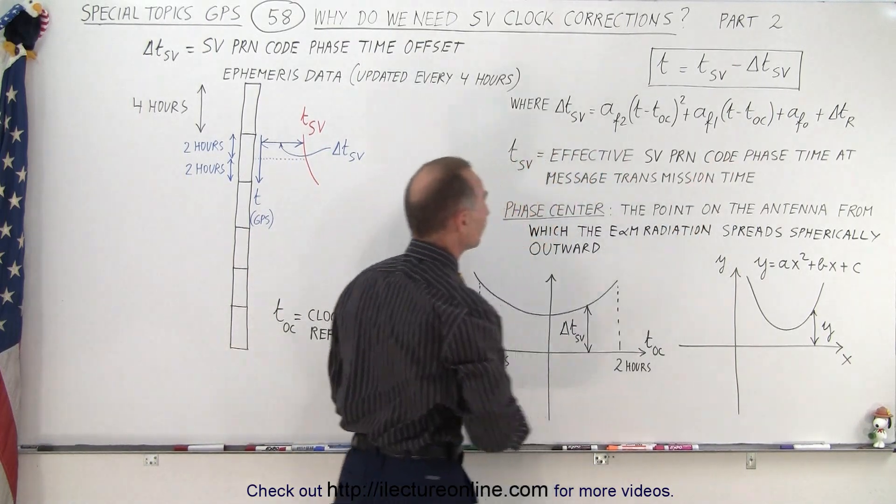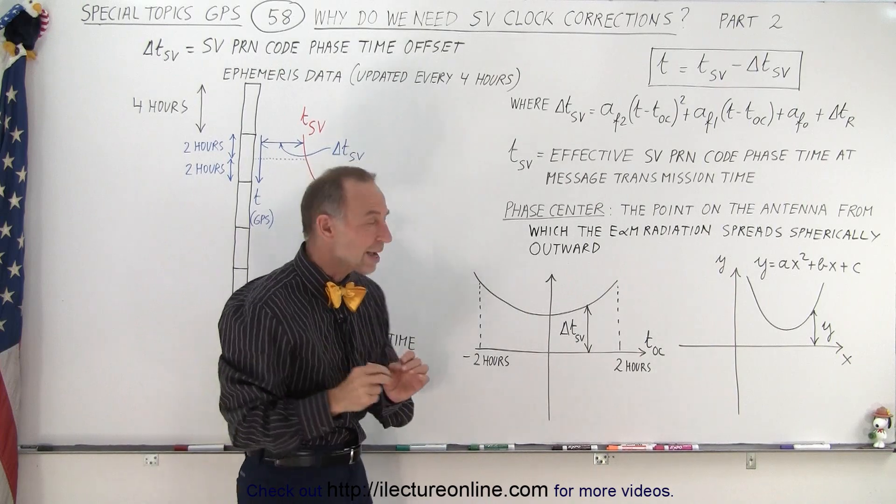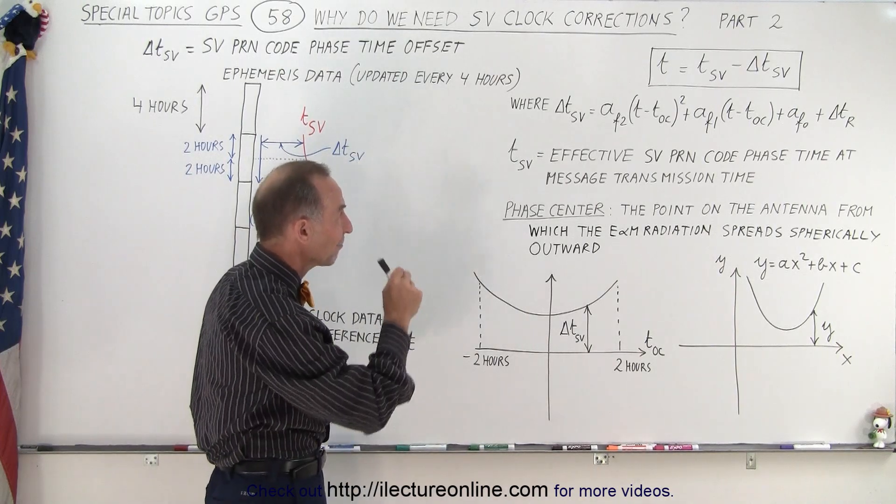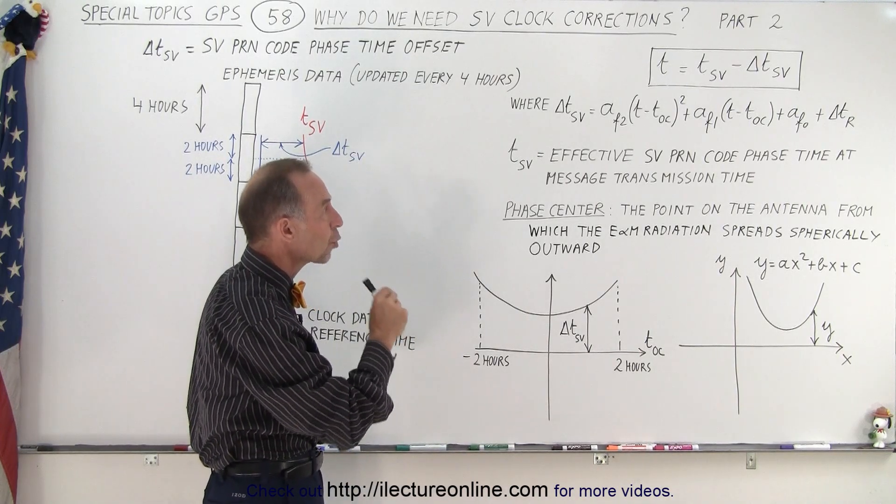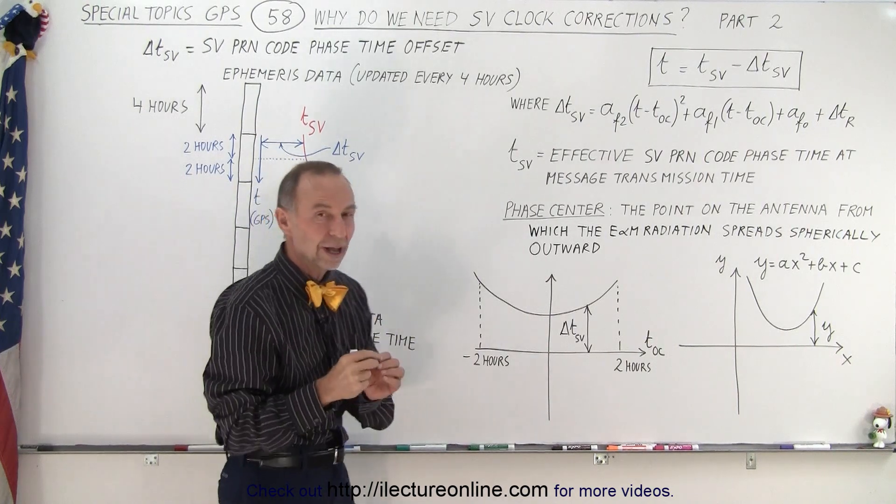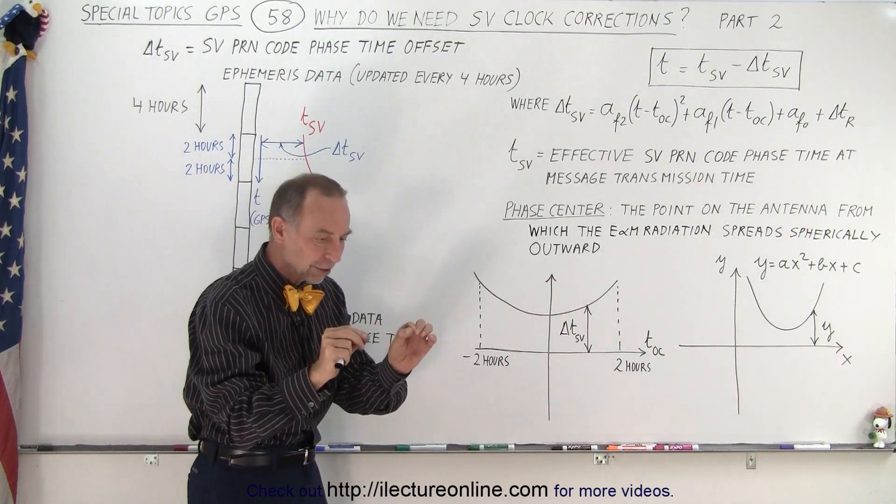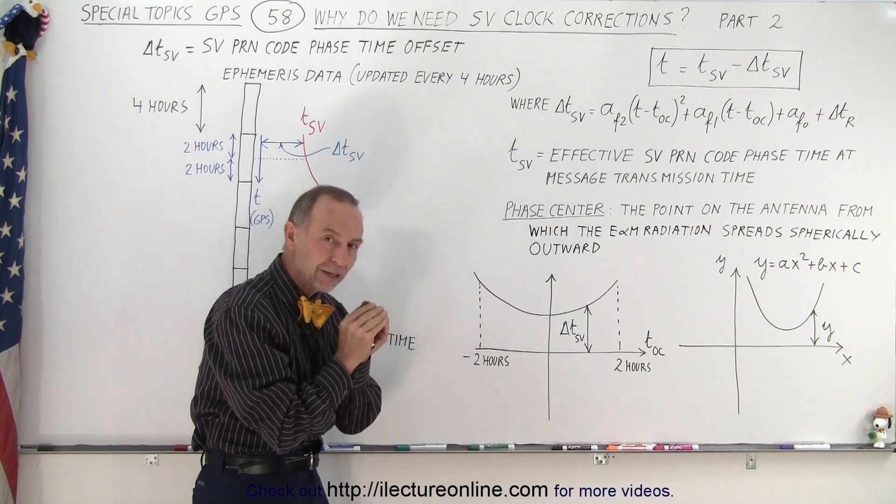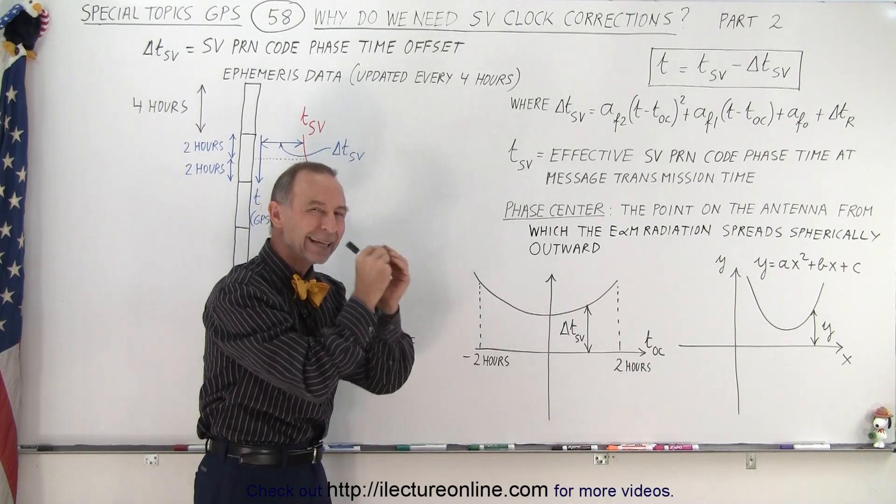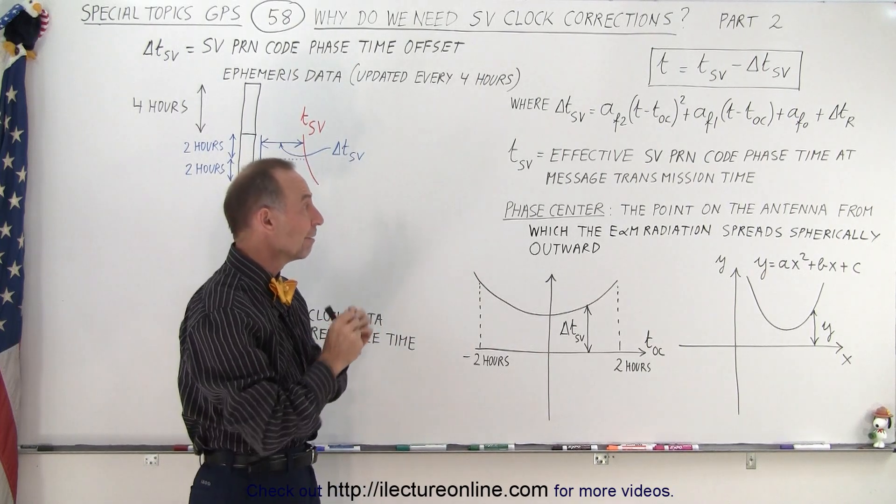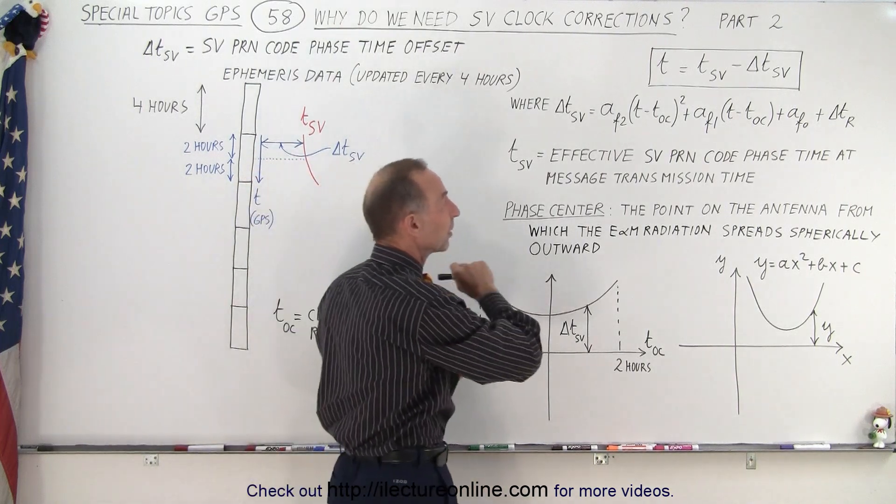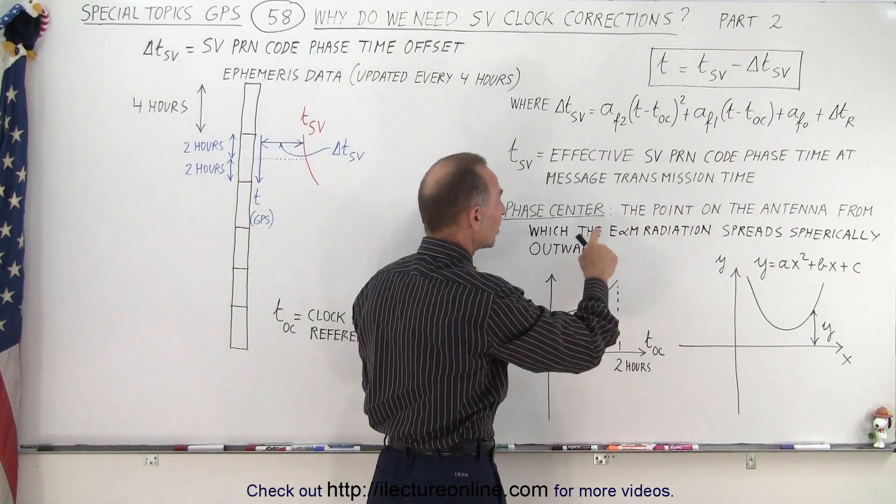Now the time SV is the effective SV PRN code phase time at message transmission time, so it's the time that's synced up to the message as it's being transmitted from the antenna.